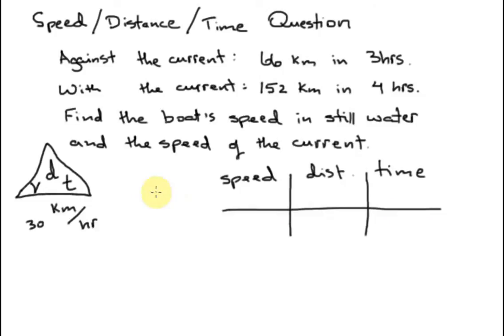So one of the categories is going against the current, and one of the categories is going with the current. So what do we know about against the current? We know the distance is 66 kilometers in a time of three hours. When we're going with the current, we know we did a distance of 152 kilometers in four hours.